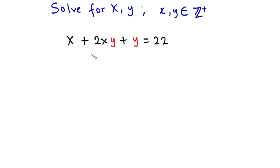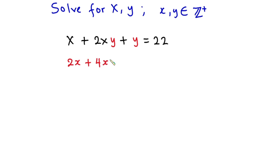The easiest way to start this problem is to use the factorization method. But if you look at the left-hand side of the equation, we have three terms which makes factoring a little difficult. To avoid this, let's make it four terms. The first thing we'll do is multiply both sides by 2, so we get 2x + 4xy + 2y = 44.